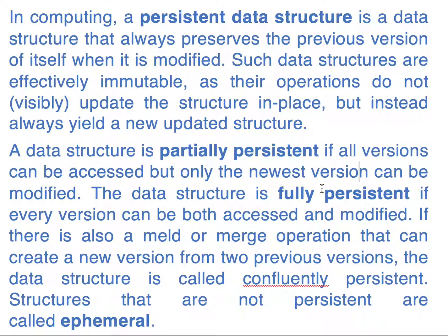A structure is fully persistent if every version can be both modified and accessed. If there is also a meld or merge operation — as we see in git with its merge operation — it can create a new version by combining two previous versions.